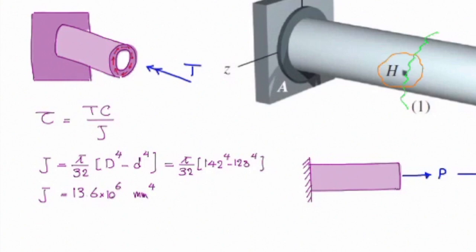And C would be distance of that point to the centroid. Point H is located on the outer surface of that tube, so that would be half of external diameter. So C would be half of 142, which is 71 millimeters. And I can plug that into that equation to calculate the stress.